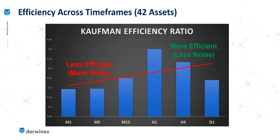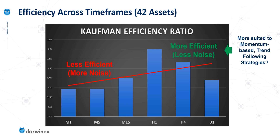This increase in noise at higher time frames might be for one of two reasons: either noise genuinely increases — meaning short-term fluctuations compared to the meaningful move within a period get larger — or this is just an anomaly in the way the indicator operates. At this stage we can't determine which it is. However, the red trend line, which is a line of best fit, does agree with the generalization that markets become more efficient as the time frame increases. The implication for traders is that higher time frames are likely more suited to momentum-based trend-following strategies, while lower time frames may be more effective for mean reversion strategies.